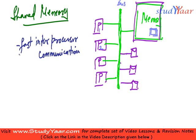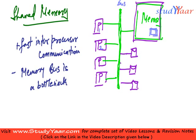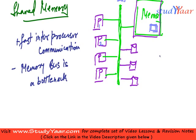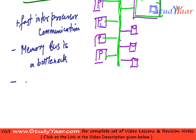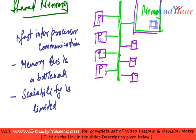The disadvantage is that the memory bus becomes a bottleneck. Since all memory accesses have to go through the memory bus, it becomes a bottleneck. Another disadvantage is that scalability is limited — I cannot add more processors indefinitely. If I add more processors, at some point all those processors will just be waiting for memory access.